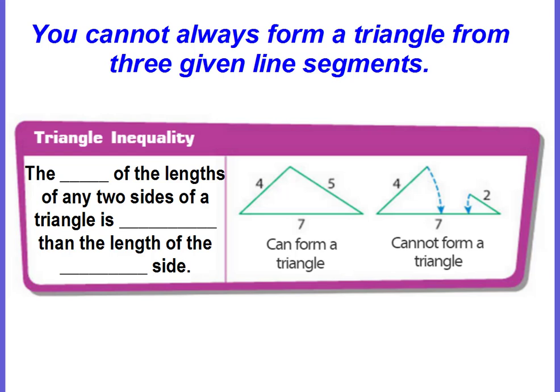Believe it or not, you cannot always form a triangle from three given line segments. The sum of the lengths of any two sides of a triangle should be greater than the length of the third side. This is what we call the triangle inequality.